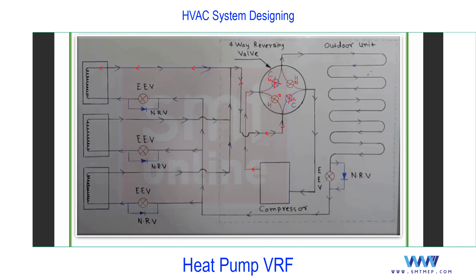In heating mode, the indoor unit's heat exchanger now becomes the condenser - we call it a heat exchanger rather than evaporator or condenser because the role can change. In cooling mode we say indoor evaporator and outdoor condenser, but in heat pump or heat recovery systems we call it a heat exchanger. The hot refrigerant at high temperature and pressure enters the indoor heat exchanger. The room temperature is low since we are using heating mode in winter, so the room air absorbs heat from the refrigerant. The refrigerant changes phase from vapor to liquid.